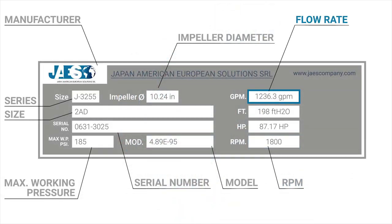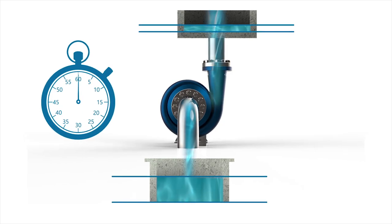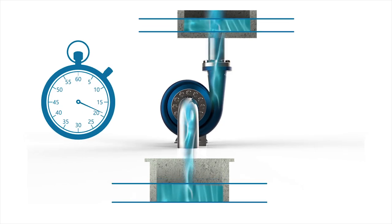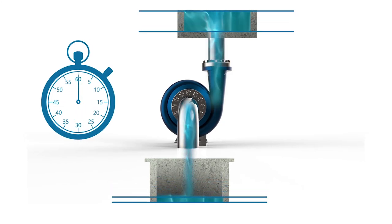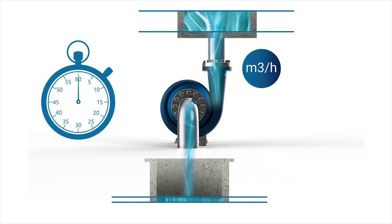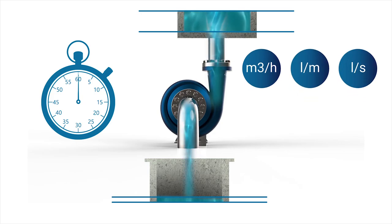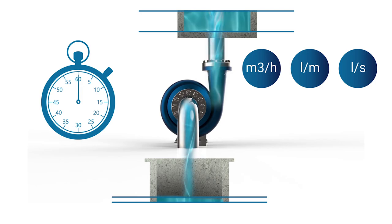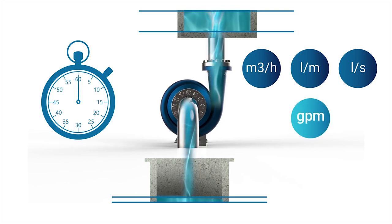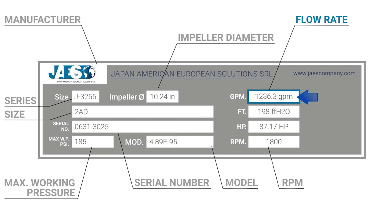The flow rate is the volume of fluid that can be moved by the pump in a unit of time. Generally, the flow rate can be expressed in cubic meters per hour, liters per minute, or liters per second. In the imperial measurement system, the flow rate is usually expressed in gallons per minute, as we can also see here in our plate.